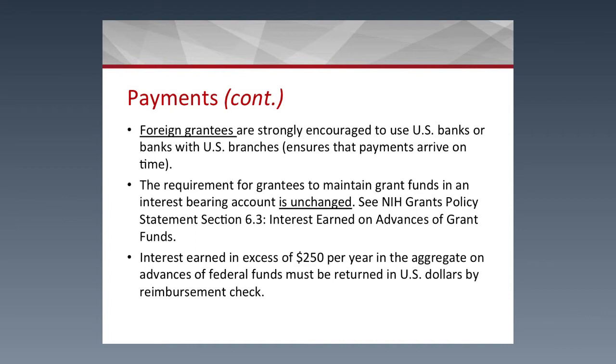Some things have not changed. It is still important — particularly for foreign grantees — that they are strongly encouraged to use a U.S. bank or a bank with U.S. branches, which makes transfers easier. The requirement to maintain grant funds in an interest-bearing account remains, and any interest in excess of $250 per year must be returned to the U.S. by reimbursement check. However, this is expected to occur less often now, since you are drawing funds as you need them and there is hardly any excess.